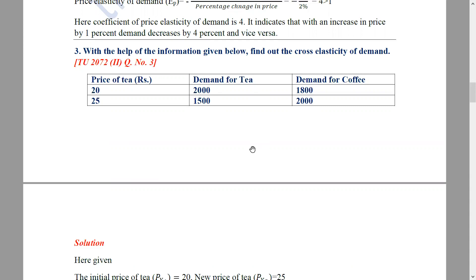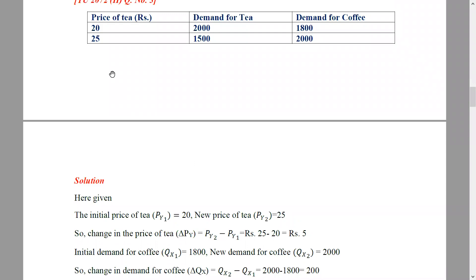Now we have a cross elasticity of demand question. The price of tea and the demand for coffee — in cross elasticity of demand, there is a price of one good and the demand for another good. The price of tea is Rs. 20, the new price is Rs. 25, so the change in price is Rs. 5. The initial demand for coffee was 1800, and the new demand for coffee is 2000, so the change in demand is 200.